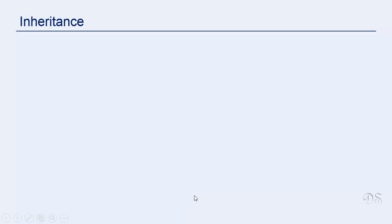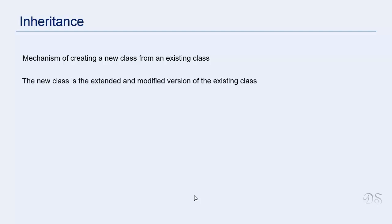In this lecture, we'll learn about inheritance, which is an important feature of object-oriented programming. Inheritance is basically a mechanism of creating a new class from an existing class. The new class is the extended and modified version of the existing class. The main advantage of inheritance is that it facilitates code reuse.